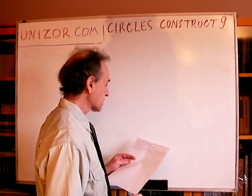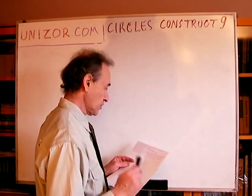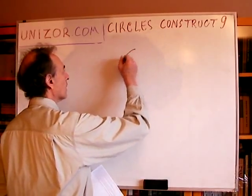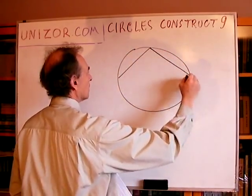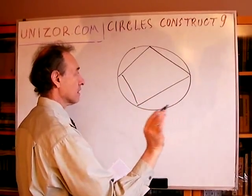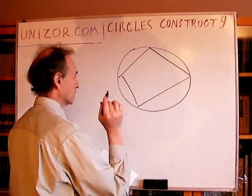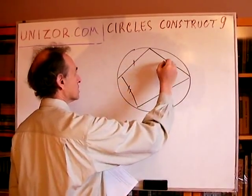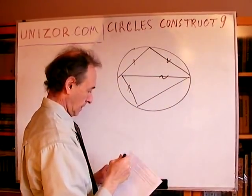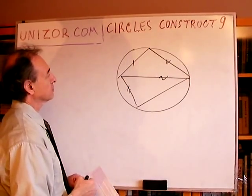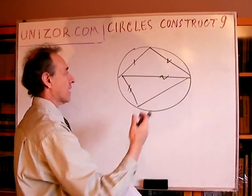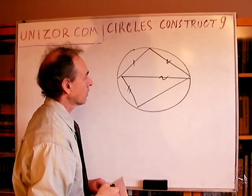Construct a quadrangle that can be inscribed into a circle, which is not given, by three sides and a diagonal. We know that we can inscribe this quadrangle into a circle, but the circle itself is not given — we just know that it's possible. What is given? Three sides and a diagonal.